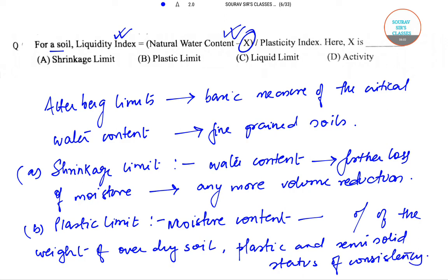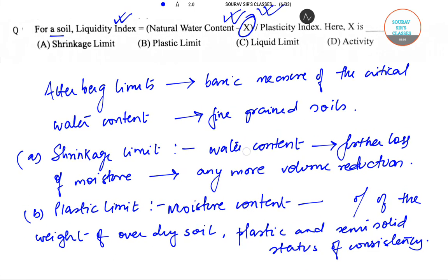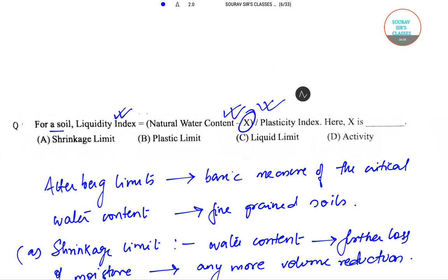So if I want to rewrite this particular formula, it will look something like this. So let me write it down. Liquidity Index can be written as natural water content minus plastic limit,